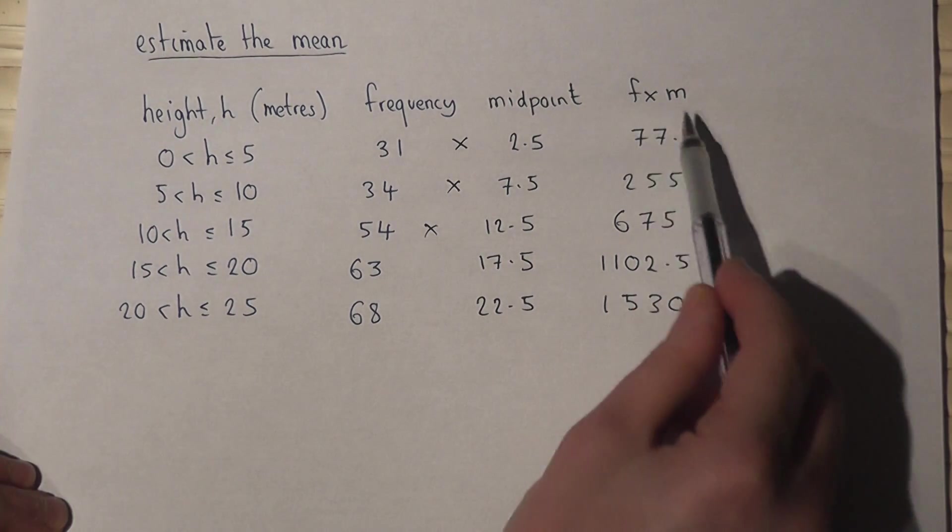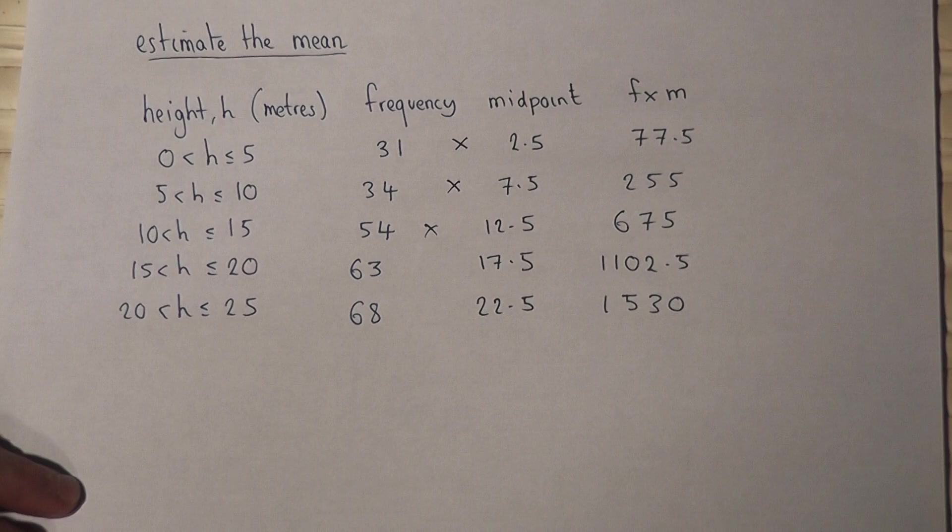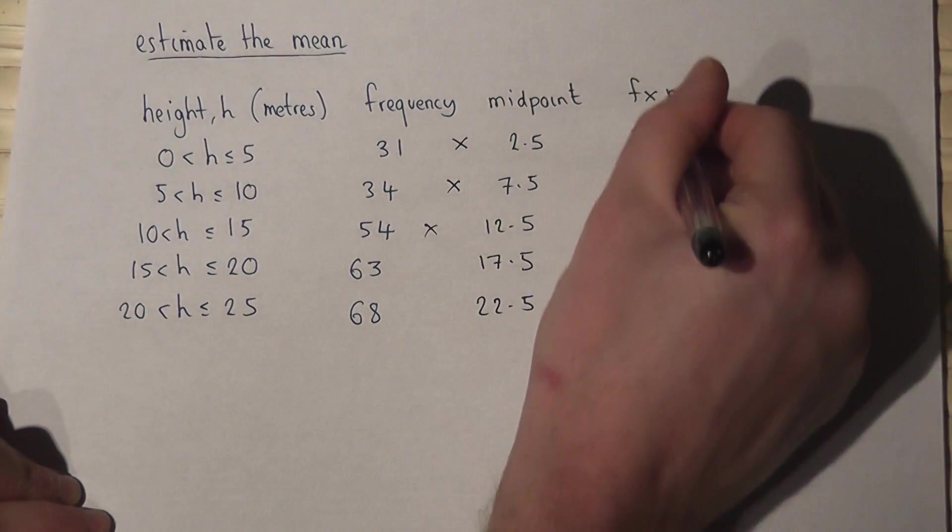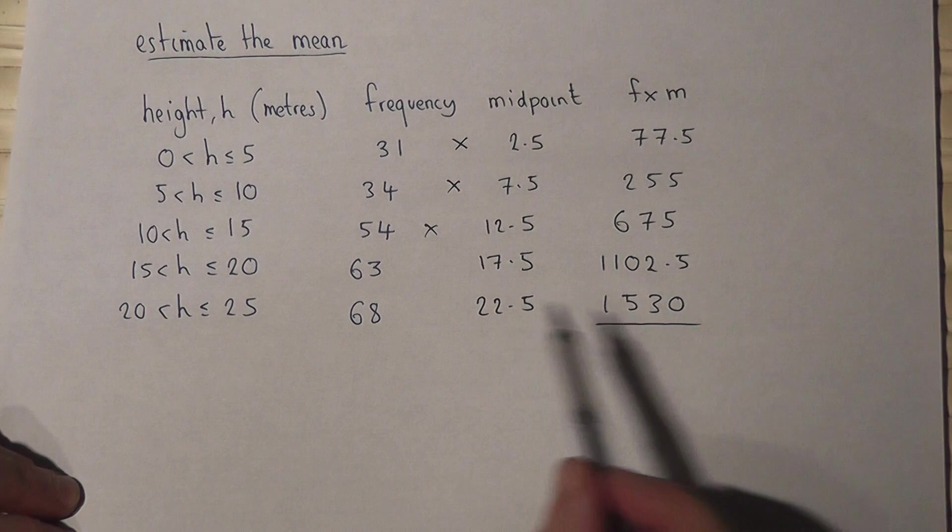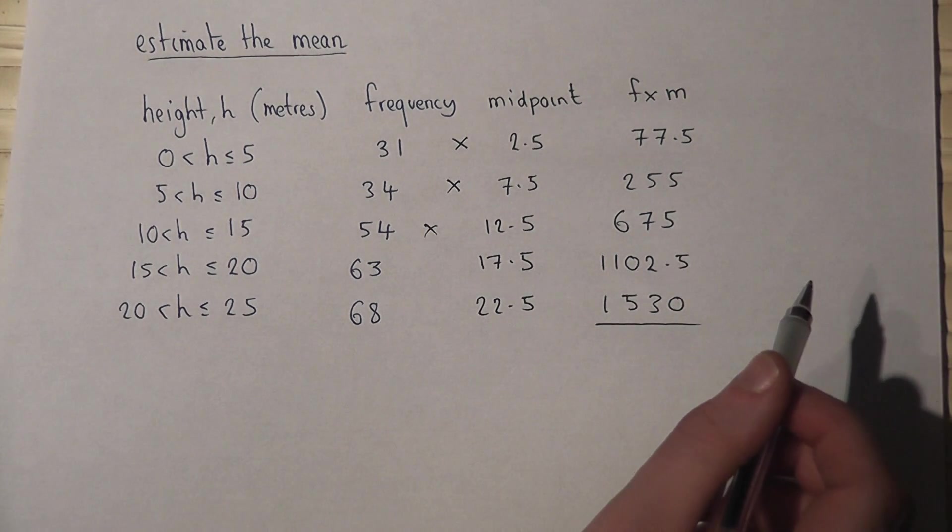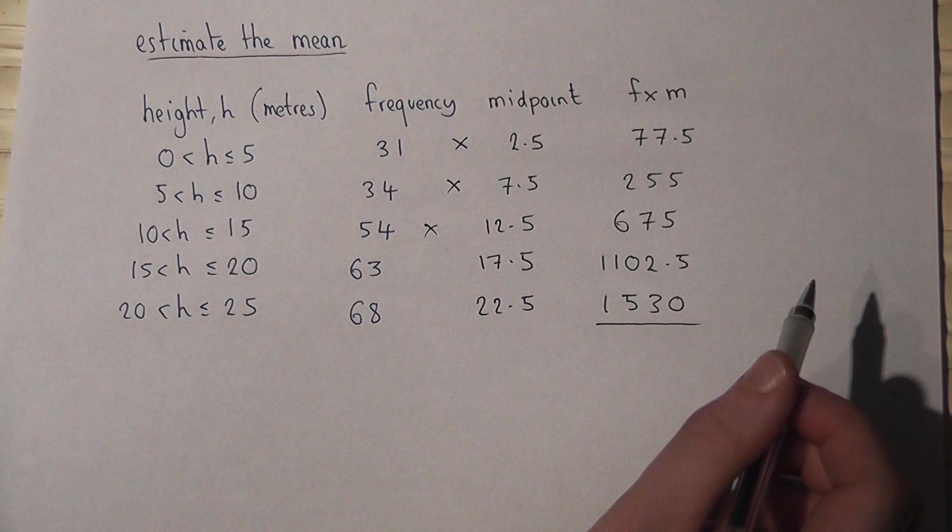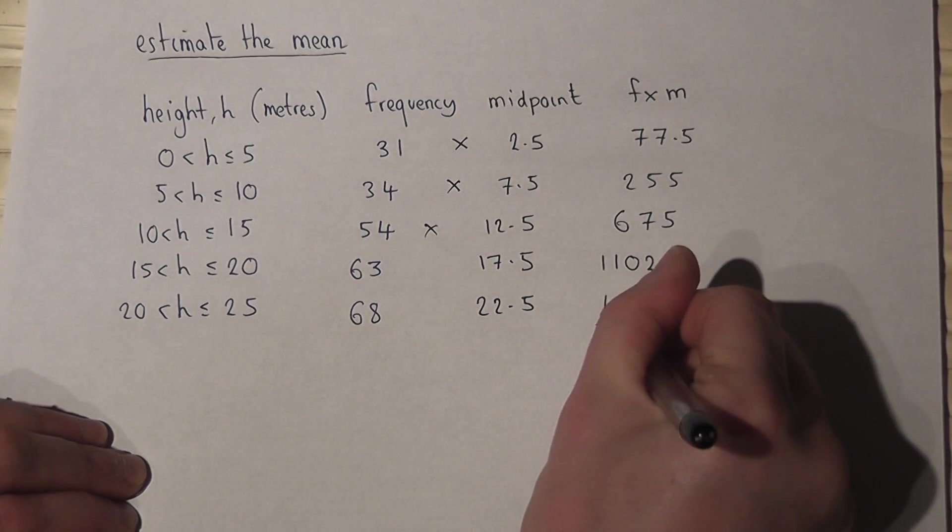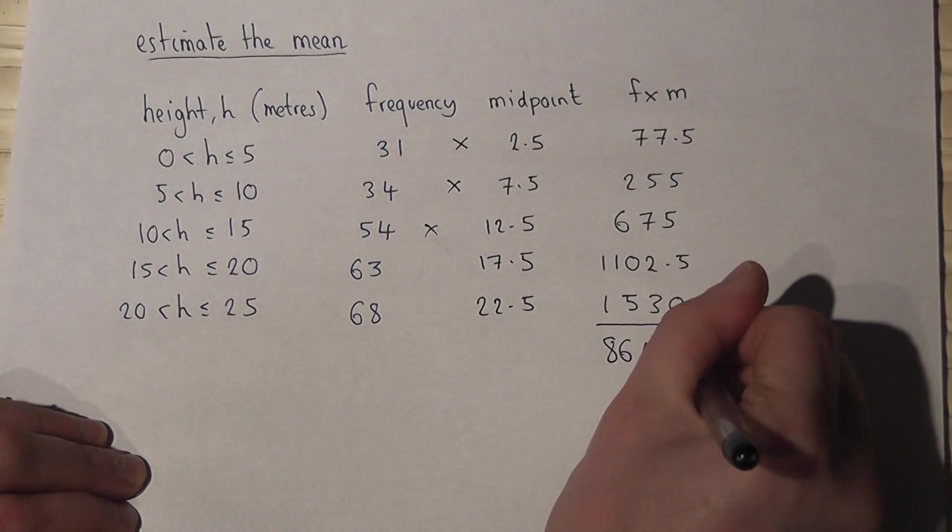These are the total heights of all the subgroups. To find the mean, I must now add together all these heights to work out the total height of all the trees. 77.5 plus 255 plus 675 plus 1,102.5 plus 1,530 gives a combined height of 8,640 metres.